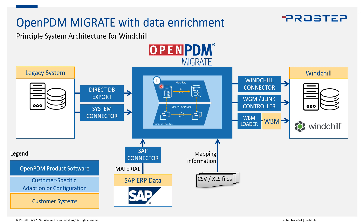One typical use case is when we are pulling from a PDM system like SmartTeam and the customer is already using SAP. During the migration, the customer may request that we get additional material information from SAP to enrich the data during the transformation before importing into Windchill. We can use the OpenPDM SAP connector to pull the corresponding material information, enrich it in our staging database, and then perform the data mapping to Stage Target — where we have an enriched Windchill data model ready for import. Additionally, enriching the data through CSV or Excel information is also something that can be incorporated during migration.